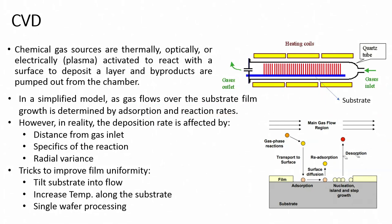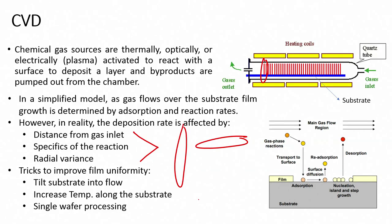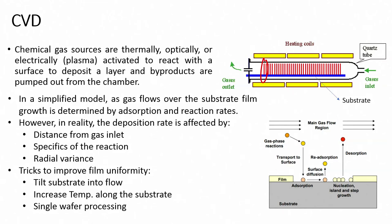Using CVD we can deposit several films, in particular insulators and silicon. The deposition rate is affected by distance from the gas inlet, specifics of the reaction, and radial variance. To improve uniformity, you can tilt the substrate into the flow, increase temperature along the substrate, and use single wafer processing.